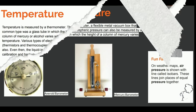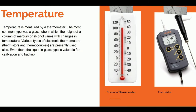Now on to temperature. The instrument used to measure the temperature of your body or even your food is the same one used to measure the temperature of the atmosphere — yes, a thermometer. The most common type is a glass tube in which the height of a column of mercury or alcohol varies with changes in temperature.